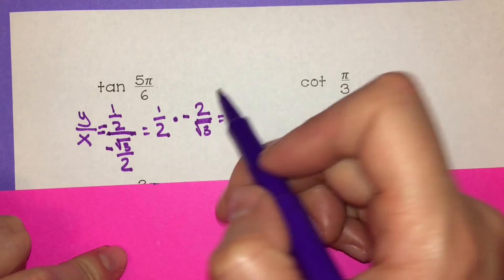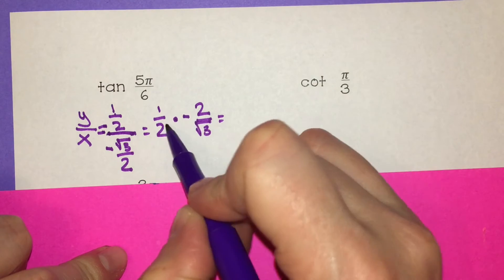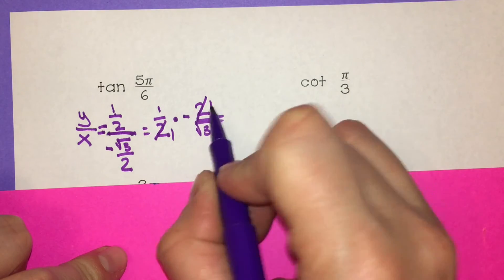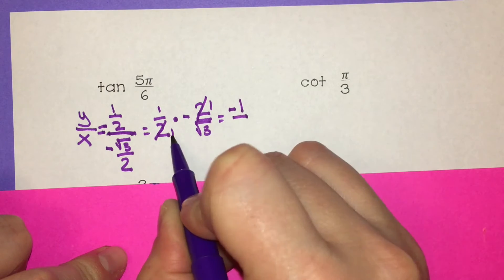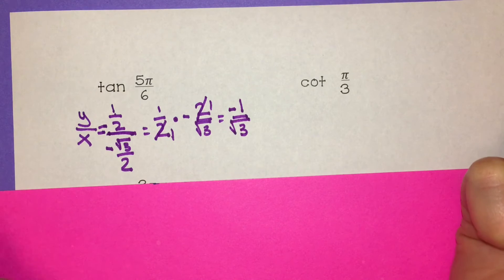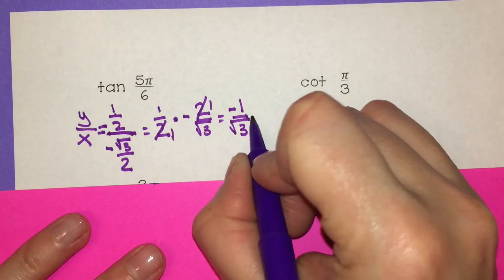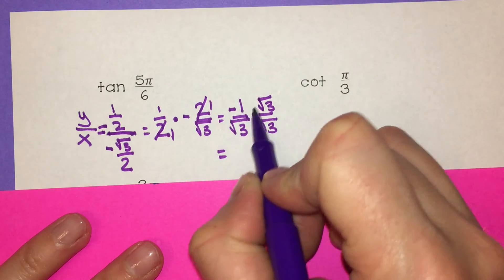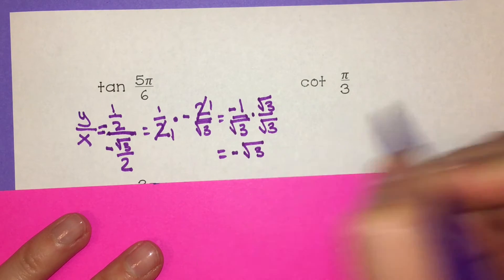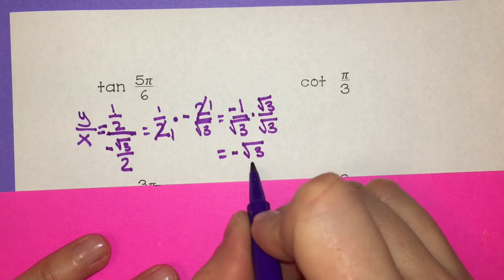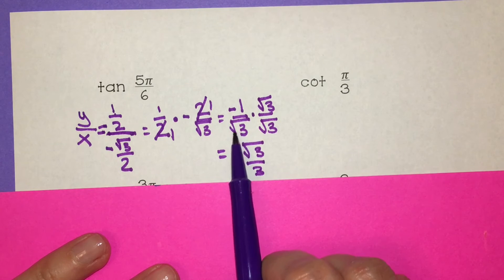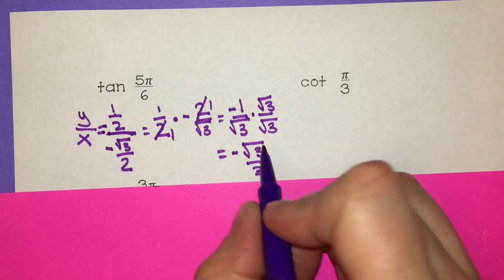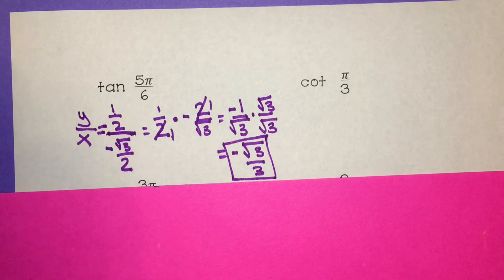Multiply straight across, or cross-simplify — the 2's cancel, giving 1 times negative 1 over 1 times square root of 3, which is negative 1 over square root of 3. But you cannot have a square root in the denominator, so multiply by square root of 3 over square root of 3. Negative 1 times square root of 3 is negative square root of 3, and square root of 3 times square root of 3 is 3, so the answer is negative square root of 3 over 3.